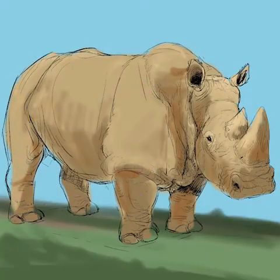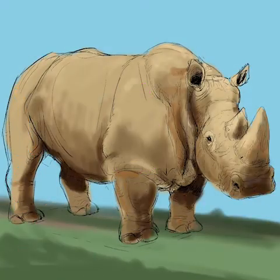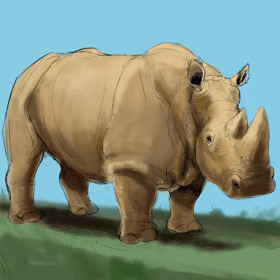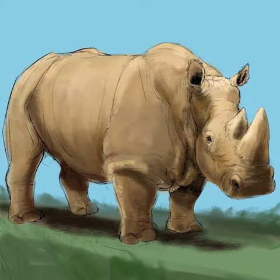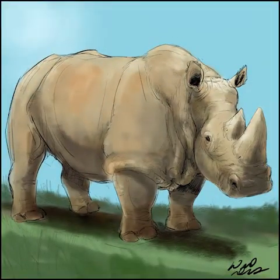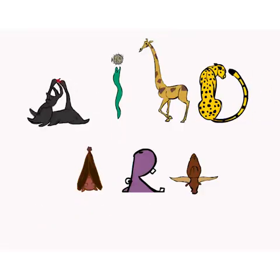White rhinos are also known as the square-lipped rhino. Their name comes from the Afrikaans word 'white' which means wide and refers to the animal's muzzle, not its color.